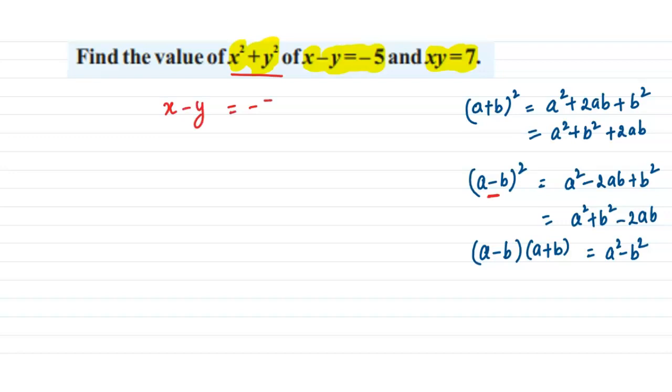We have x - y = -5 with us, and we have the value of xy which is 7. That means we can easily find out the value of 2xy which would be 14. So from this identity we can figure out the answer.